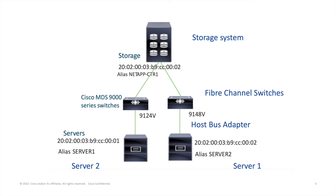Let's see with this example how the Fibre Channel SAN network works. To remind you again, a SAN network uses separate physical infrastructure. It cannot run over an Ethernet network. It's completely different — it's the Fibre Channel network.